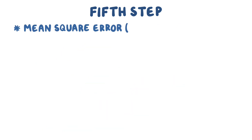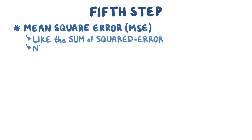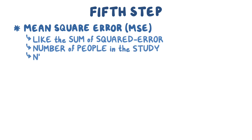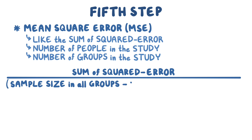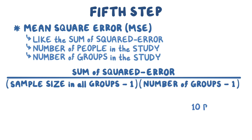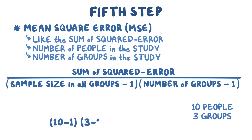The mean square of the error is like the SSE but accounts for the number of people and groups in the study. To calculate it, divide the SSE by the degrees of freedom of error, which is the sample size minus 1 times the number of groups minus 1. In this example, there are 10 people and three groups, so the degrees of freedom of error is 9 times 2, which equals 18. The MSE is then 35 divided by 18, or 1.94.